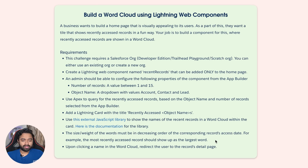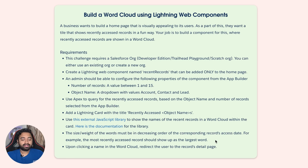The configurable properties are the number of records — a value between 1 and 15 — and the object name. Once this component is added to App Builder, the admin selects which object records to show and how many. We'll use Apex to query for recently accessed records based on the object name and number of records selected. Then add a Lightning Card with the title 'Recently Accessed [Object Name]s'.